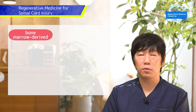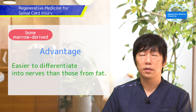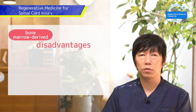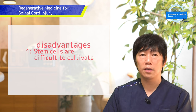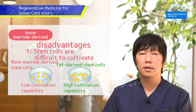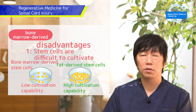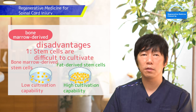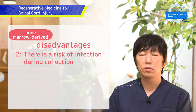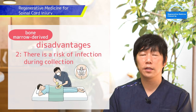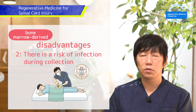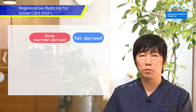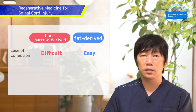Stem cells from bone marrow are said to be easily differentiable into nerves, but there are two major disadvantages. First, they cannot be cultured in large numbers — fat-derived stem cells can be increased to between 100 million and 150 million cells, but bone marrow cells cannot reach that extent. Second, collecting bone marrow stem cells requires a needle to make a hole in the pelvis, which risks bone marrow inflammation or sepsis. Fat-derived stem cells, by contrast, can be easily extracted without significant risk.